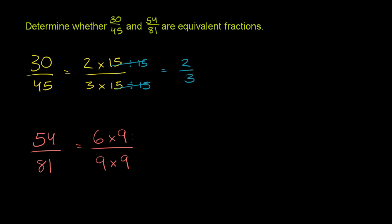You can divide the numerator and the denominator by 9. So we could divide both of them by 9. 9 divided by 9 is 1. 9 divided by 9 is 1. So we get this as being equal to 6 over 9.